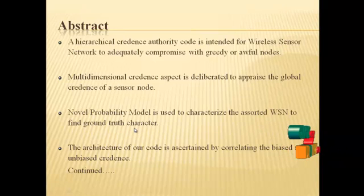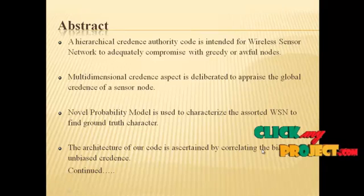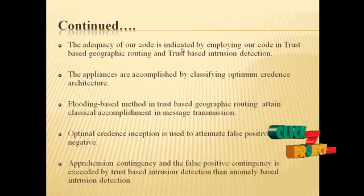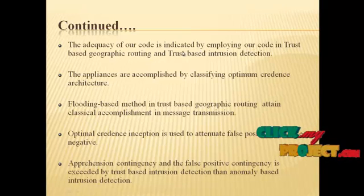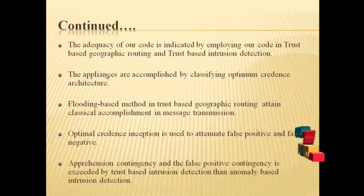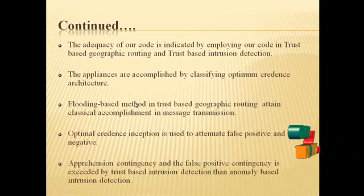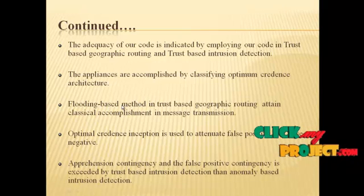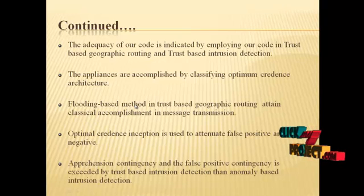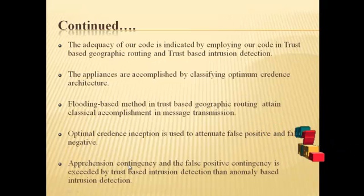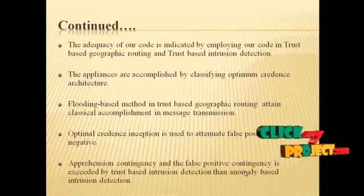Our hierarchical trust management protocol is validated by comparing the trust generated by the execution of our protocol and the trust obtained from the original status of a node. The adequacy of our protocol is evaluated by applying it in trust based geographic routing and trust based intrusion detection. The trust based geographic routing achieves a higher ratio in message delivery and delivers messages without delay. The false positives and false negatives are minimized by using an optimal trust threshold in trust based intrusion detection, which proves more effective than traditional anomaly based intrusion detection.